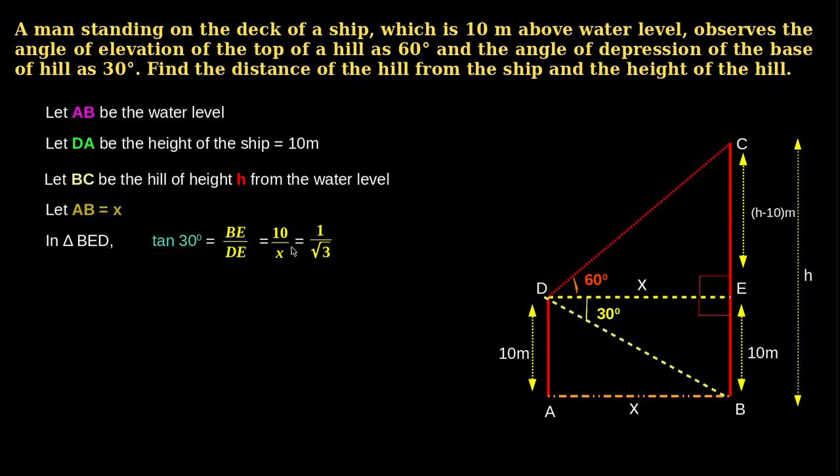We know that tan 30 equals 1 by root 3. Therefore, 1 by root 3 equals 10 by X. On cross multiplication, we get X equals 10 root 3 meters.